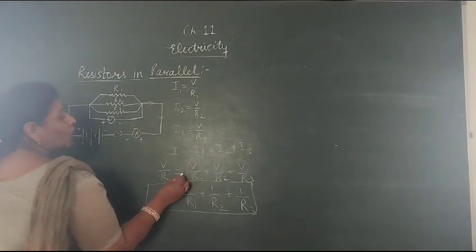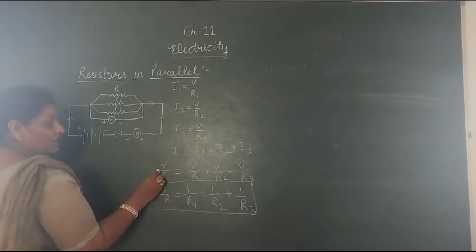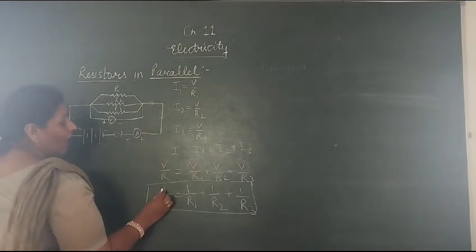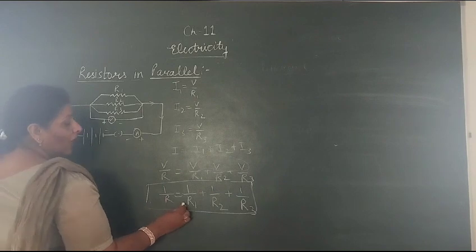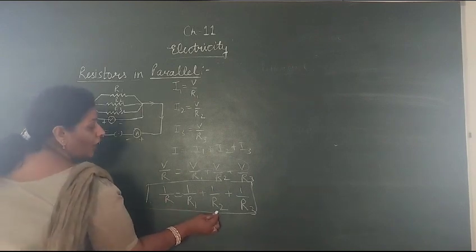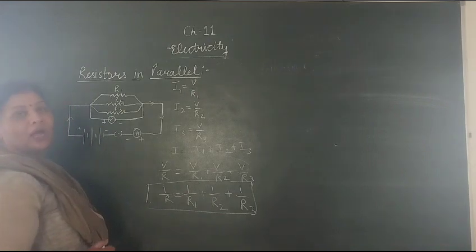If we cancel V from both sides, then V will be eliminated and we will get 1 upon R equals 1 upon R1 plus 1 upon R2 plus 1 upon R3.